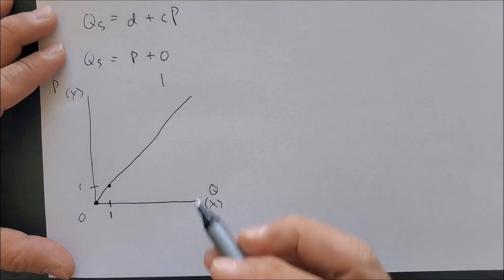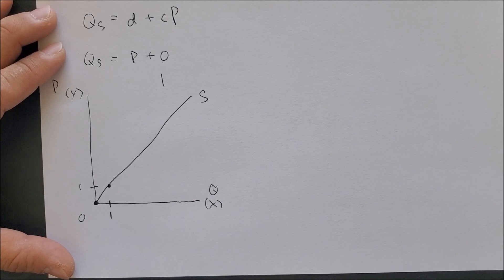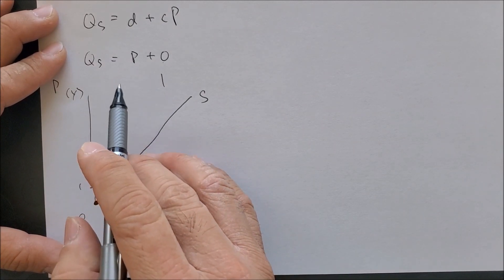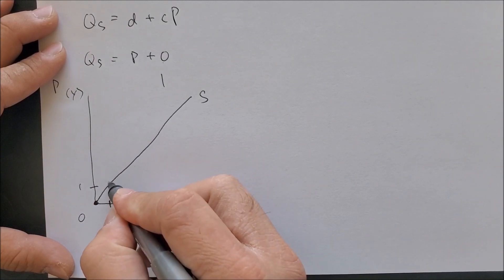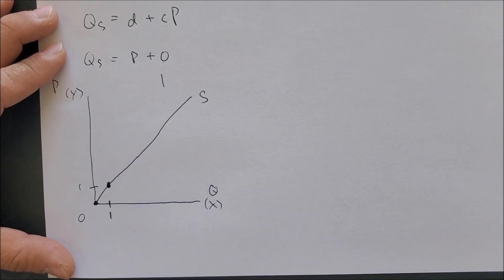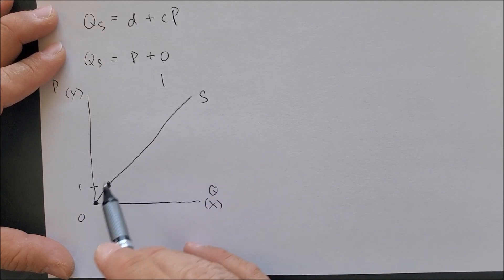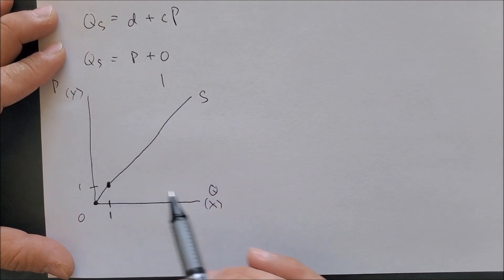And label this the supply curve. So again, like demand, we can model what producer's behavior looks like on a graph. We can show that we have an upward sloping curve which represents the supply curve.